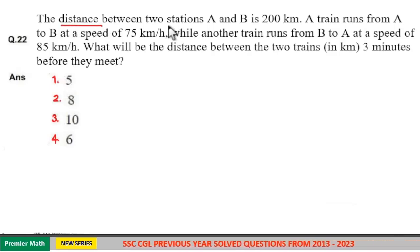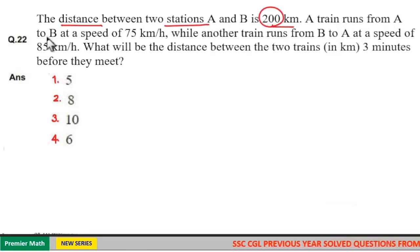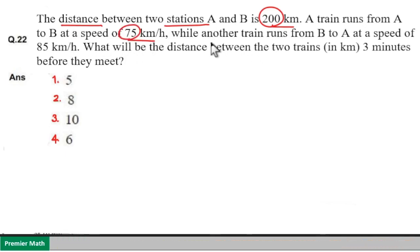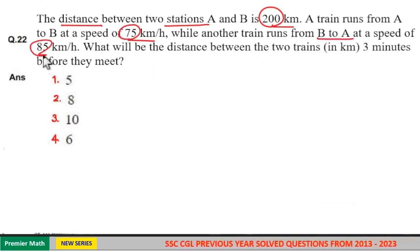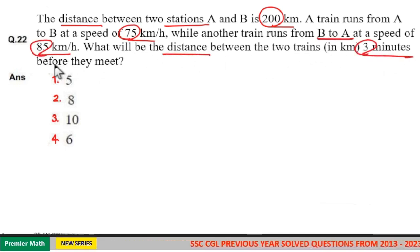The distance between two stations A and B is 200 km. A train runs from A to B at a speed of 75 km per hour, while another train runs from B to A at a speed of 85 km per hour. What will be the distance between the two trains 3 minutes before they meet?